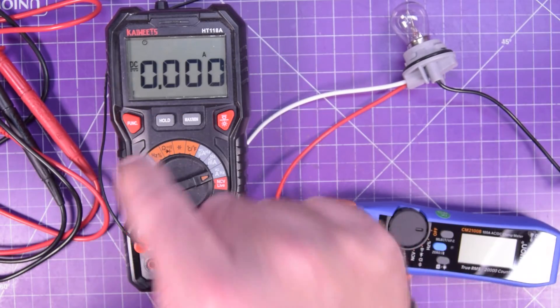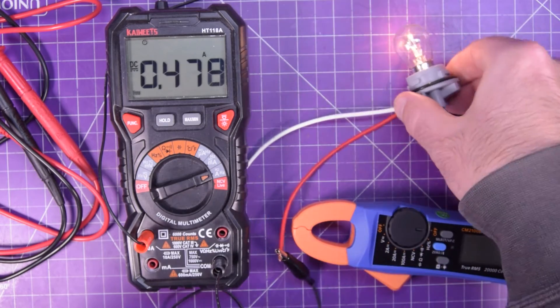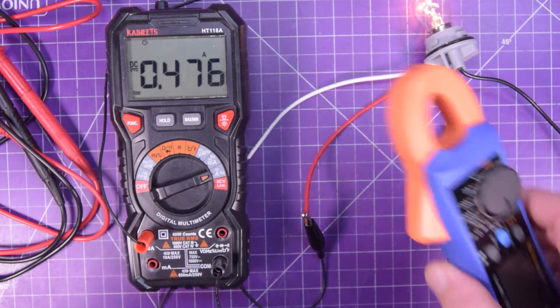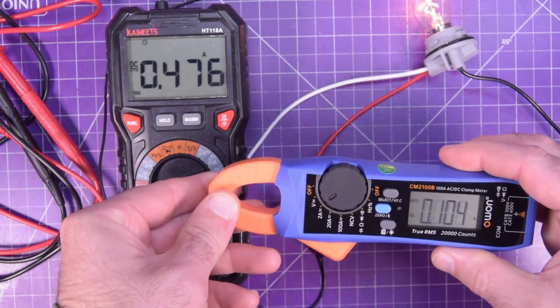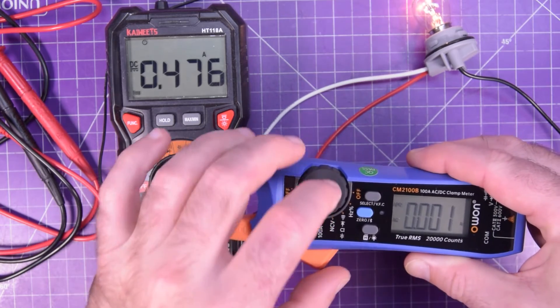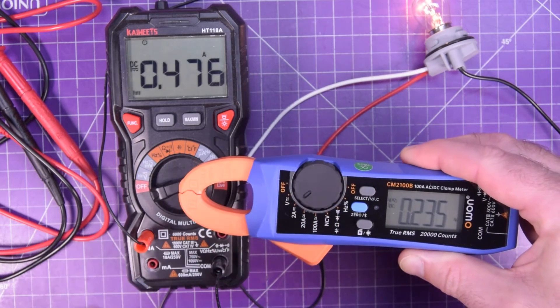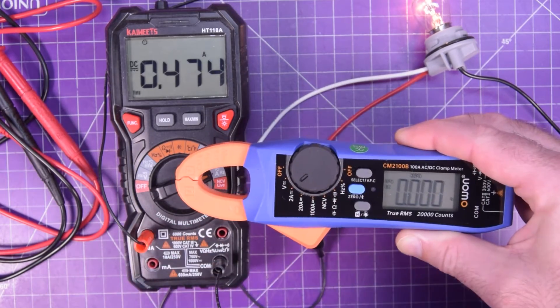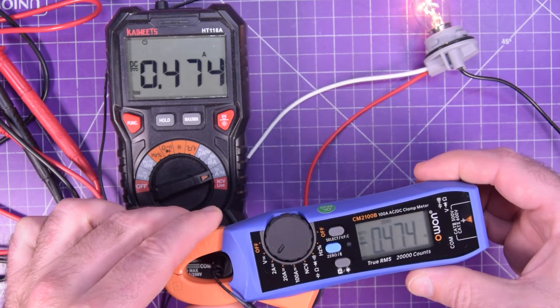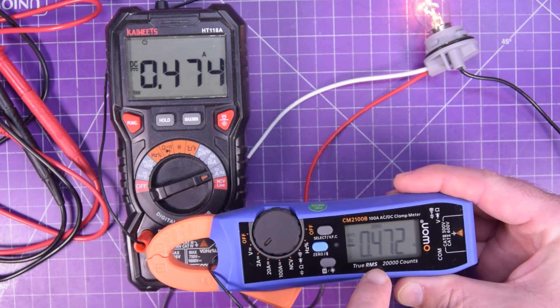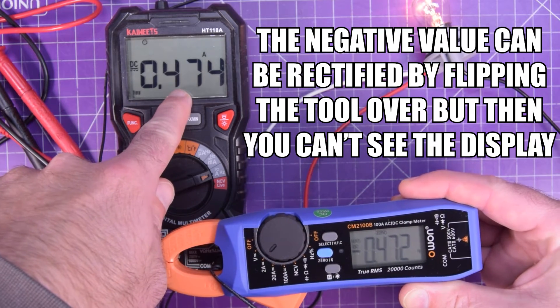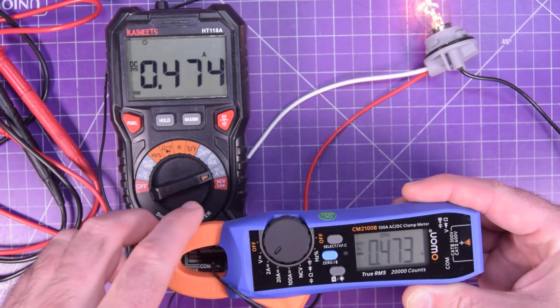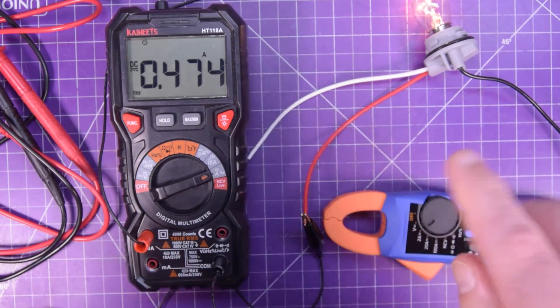So I have the Kaiweets HT118A, and we have just a single filament of this dual filament bulb here. This is the park light, and it's giving us just about half an amp. And now let's turn this thing onto the two amp range. And it is on AC. I thought it started on DC. Maybe it depends on what it was at. But you see right now it's picking up 235 milliamps. So we'll just zero that and then clamp it around our cable. Oh my God, look at how accurate. So 472 and we're reading 474 milliamps. So it's doing really well in this case. That is actually quite nice.